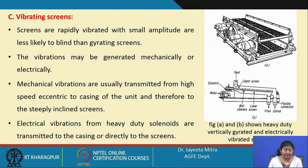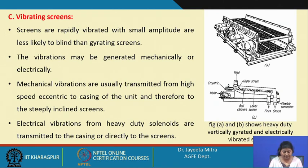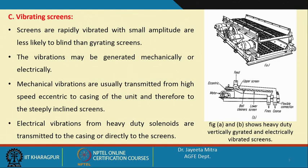The vibration may be generated mechanically or electrically. Mechanical vibrations are usually transmitted from a high-speed eccentric to the casing and then to the steeply inclined screens. Generally these screens are inclined to have easy flow of material. Electrical vibrations from heavy-duty solenoids are transmitted to the casing or directly to the screens, causing the casing to vibrate with small magnitude. The first figure shows the heavy-duty vertically gyrated screen and the second shows the electrically vibrated screen.